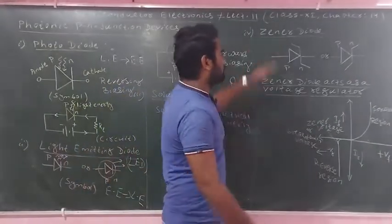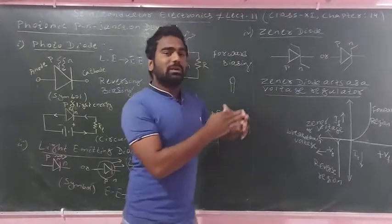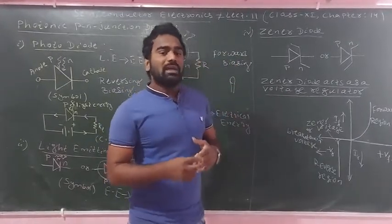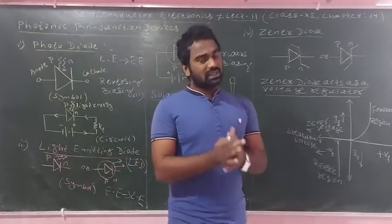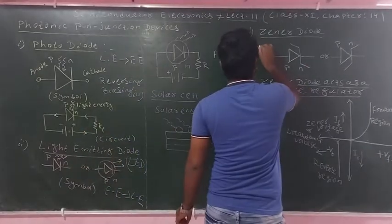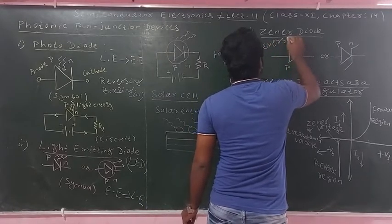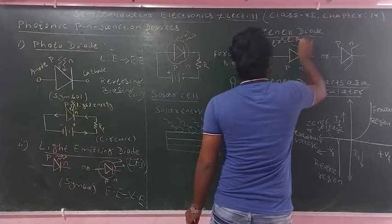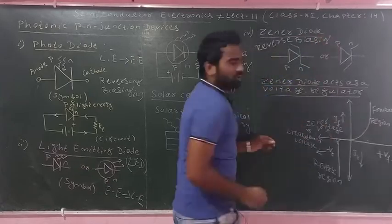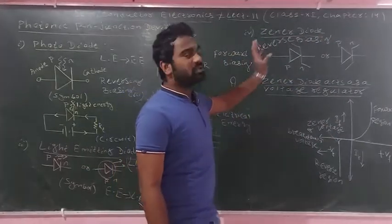The fourth device is the Zener diode. It works on the principle of reverse biasing. It is a PN junction device which is designed to operate only in the reverse biasing region.